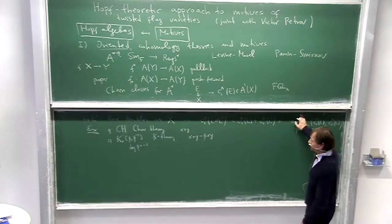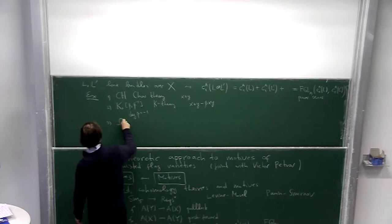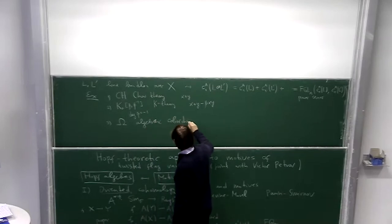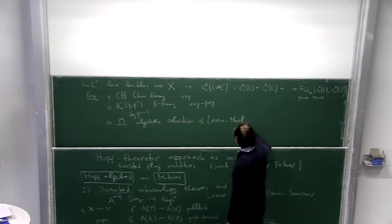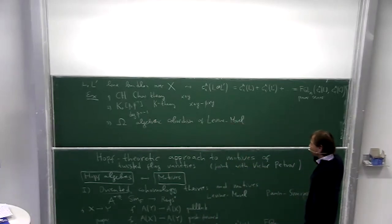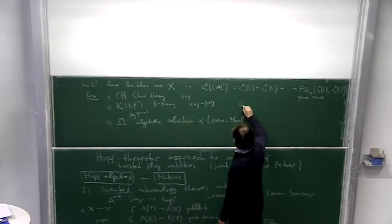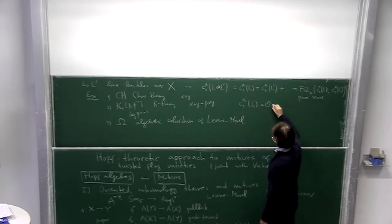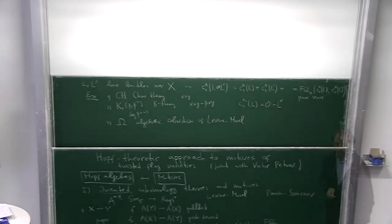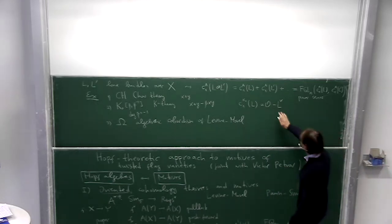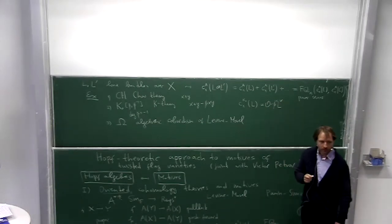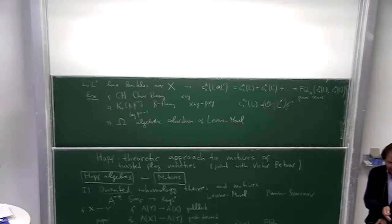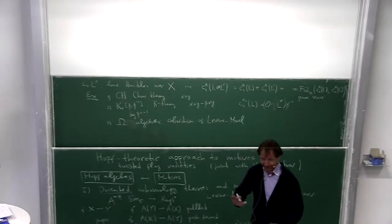So it's just K zero graded. In this case the formal group law looks like this, so called multiplicative formal group law. So it's also a polynomial. You see a degree minus one because we want it to be homogeneous. Degree of X and Y is one, so quite natural the degree of beta is minus one.